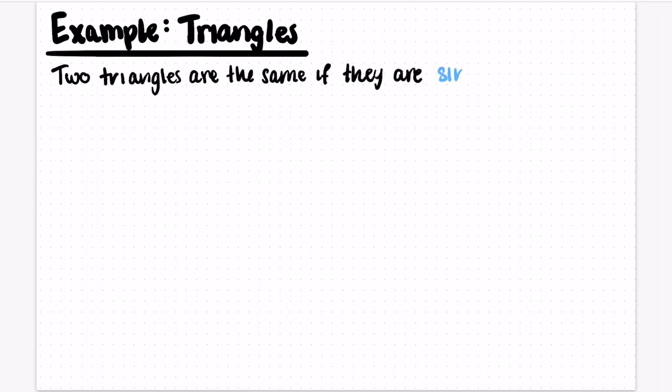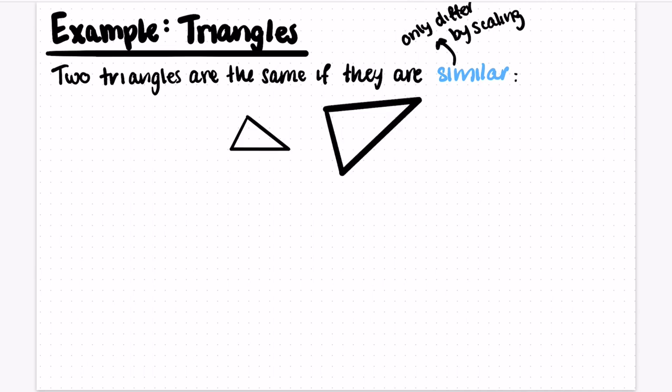Now let's do a slightly more complicated example of triangles. So we'll say that two triangles are the same if they're similar. This means that I can take my triangle, and I can zoom in on it, or rotate it, or shrink it.